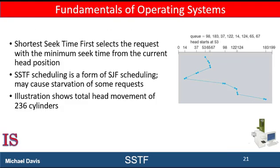Shortest Seek Time First is another algorithm that retrieves disk requests. As the name suggests, it goes to the request that is closest to the head, regardless of which direction the next request is in. There are some drawbacks: there are high chances of starvation; if the seek time is higher than the incoming jobs, switching directions may slow the process; and there are also chances of overhead. This algorithm is not the most optimal one.